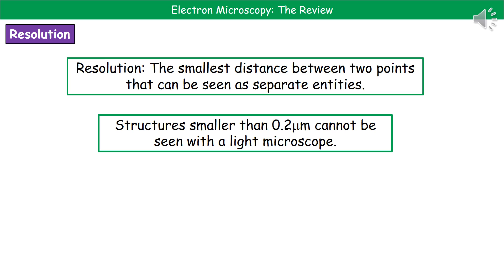Welcome to our review on electron microscopy. The first thing we need to understand is the definition of a key term to do with microscopes, and that's the term resolution. When we're talking about the resolution of a microscope, we're referring to the smallest distance between two points that can be seen as separate entities. If we think about our light microscope, any structure smaller than 0.2 micrometers can't be seen with it.